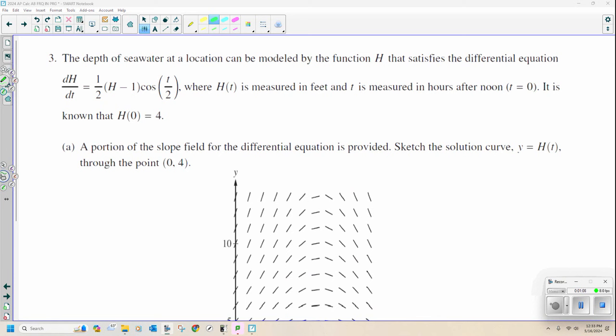It is known that h of zero is four. Three A tells us that a portion of the slope field for the differential equation is provided. Sketch the solution curve, y equals h of t, through the point zero four.